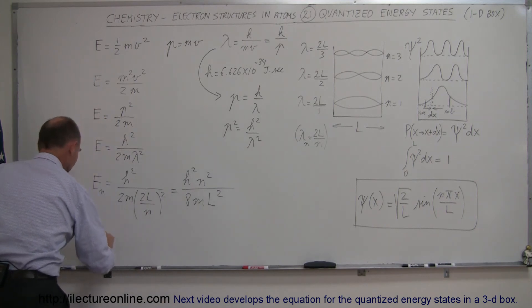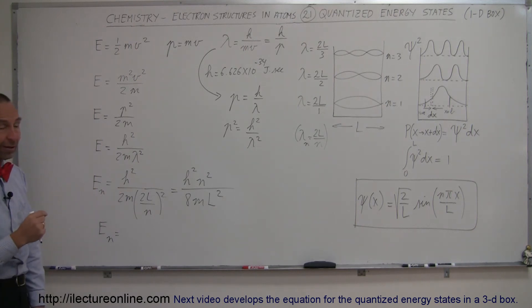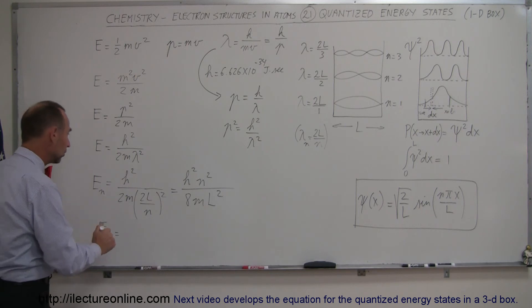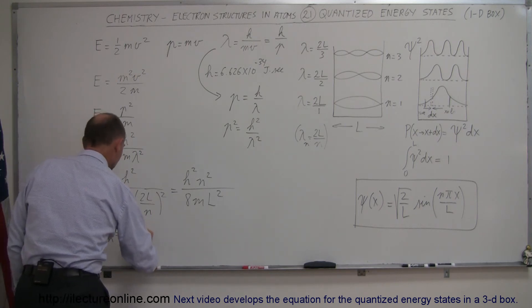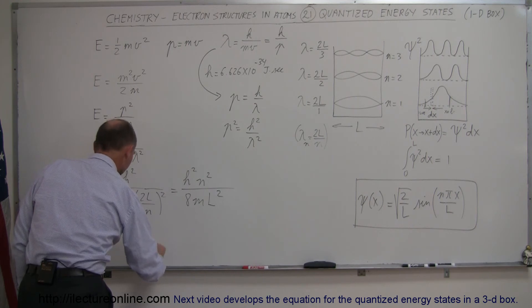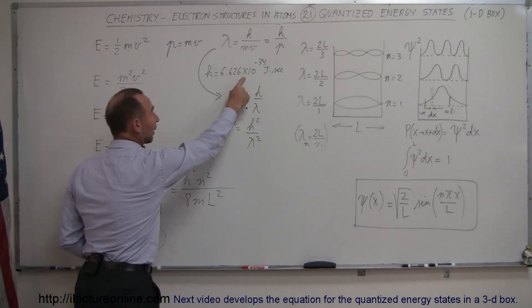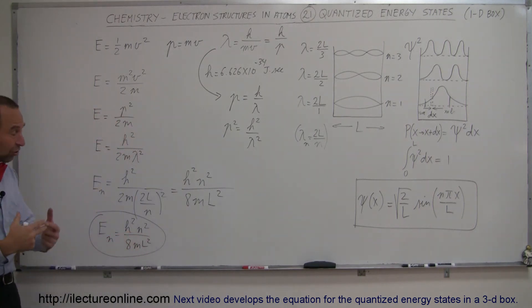And there I have now an equation that tells me that in a single one-dimensional box with a particle moving back and forth like an electron, it can only have energy levels according to this equation. So this would be h squared n squared divided by 8ml squared.